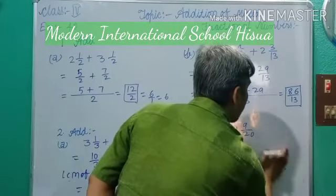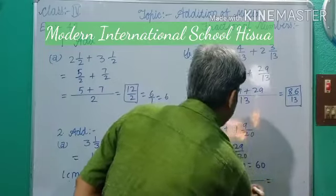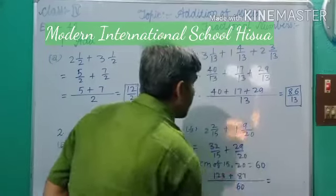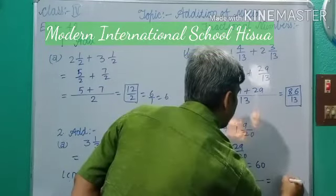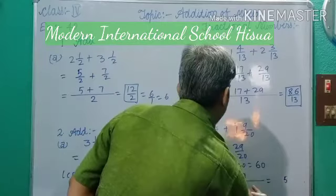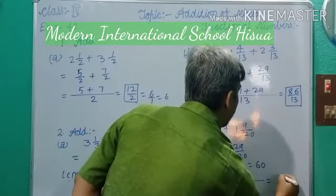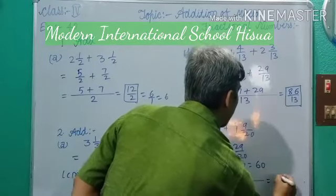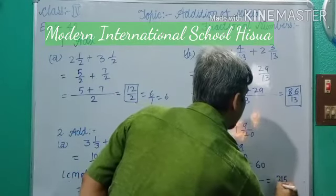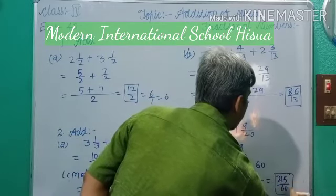Now add the numerators: 7 plus 8 is 15, carry 1, then 8 plus 1 plus 1 is the next digit — giving 215 over 60. Dear students, this is your final answer.